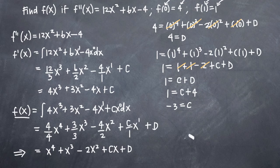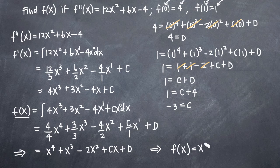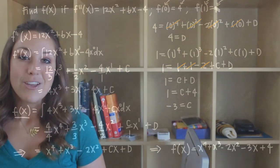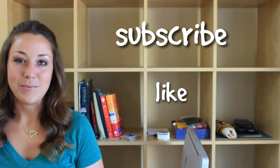Now we have solutions for c and d and we can plug them back into our original function to get our final answer. So f of x is equal to x to the fourth plus x cubed minus 2x squared minus 3x plus 4. And that's it — that's our original function f of x given the second derivative f double prime of x and these two initial conditions. I hope you found that video helpful. If you did, like this video and subscribe to be notified of future videos.